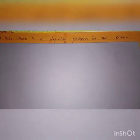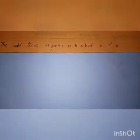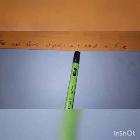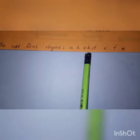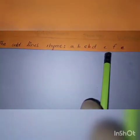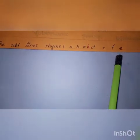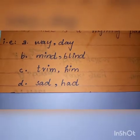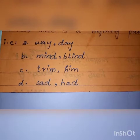The odd lines rhyme with a pattern like A, B, C, B / D, E, F, E — the last word of the second line rhymes with the last word of the fourth line, and the last word of the sixth line sounds similar to the last word of the eighth line. The rhyming words are: way/day, mind/blind, trim/him, sad/had.